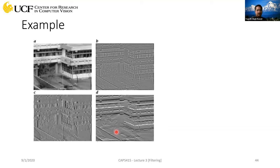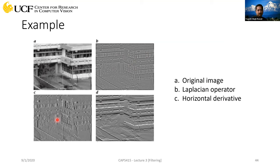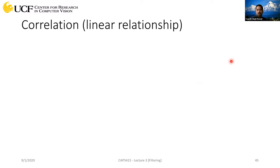Let's apply these filters to actual images. This is the original image. This is a Laplacian operator — we'll cover this in the next lecture when we talk about edges. Applying it gives a nice output with clean edges, whatever edges are present. If you apply the horizontal derivative mask we just saw, you get all the edges in the X direction. Similarly, applying the vertical derivative gives all the edges in the vertical direction.